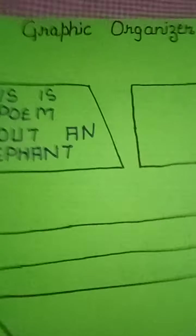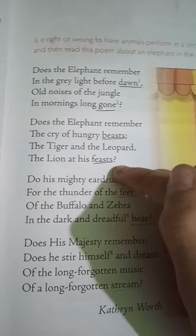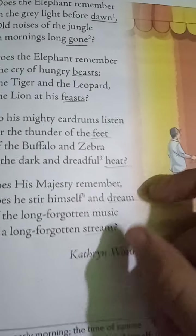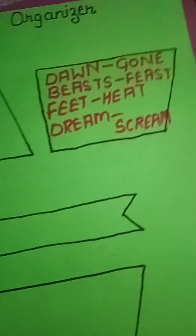So friends, if you read any poem, it is important on a graphic organizer to put rhyming words. So in this one, our rhyming words will be — see the paragraphs and search for the rhyming words. Our rhyming words are: Dawn, Gone, Beasts, Feasts, Feat, Heat, Dream, and Scream. So we will write these in the second shape.